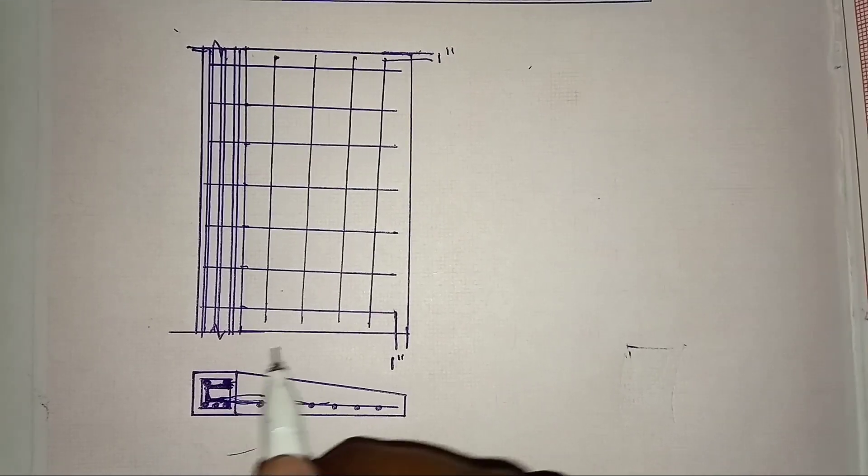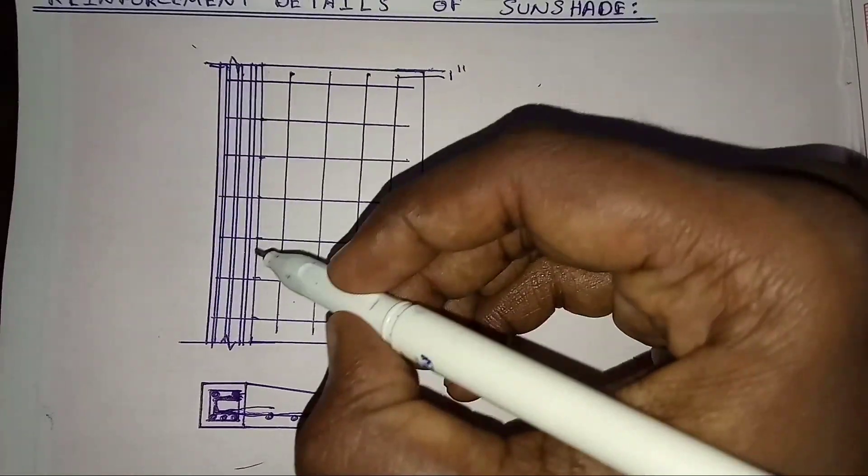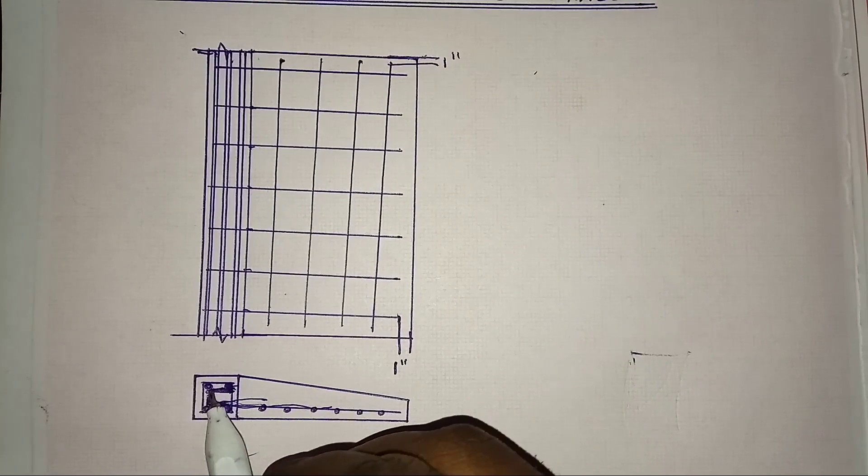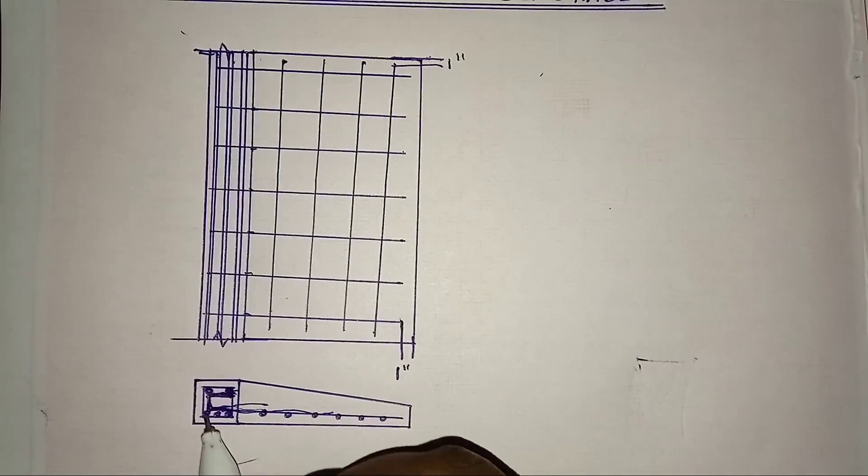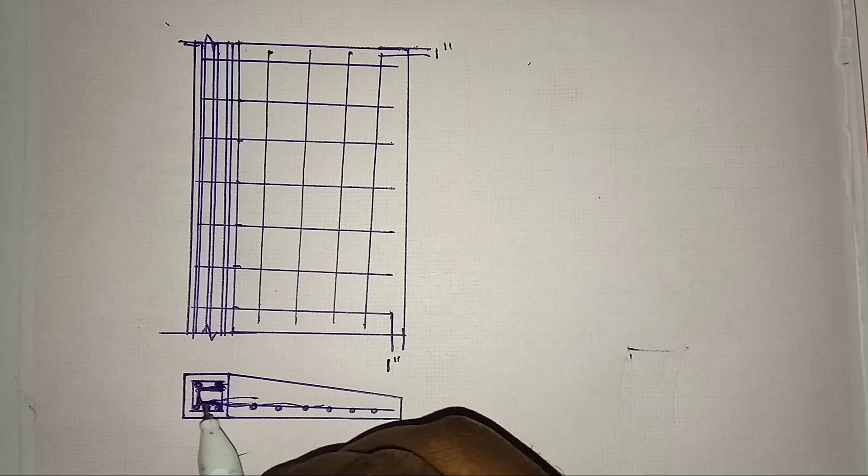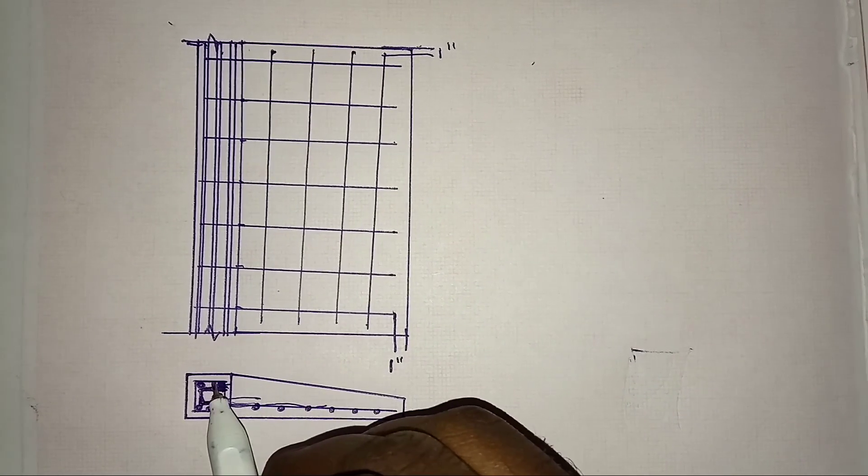So here is the cross section. This is the top view. This is a lintel concrete. There are two reinforcement on top and there are three reinforcement on top. This is the reinforcement inside. There are stairs.